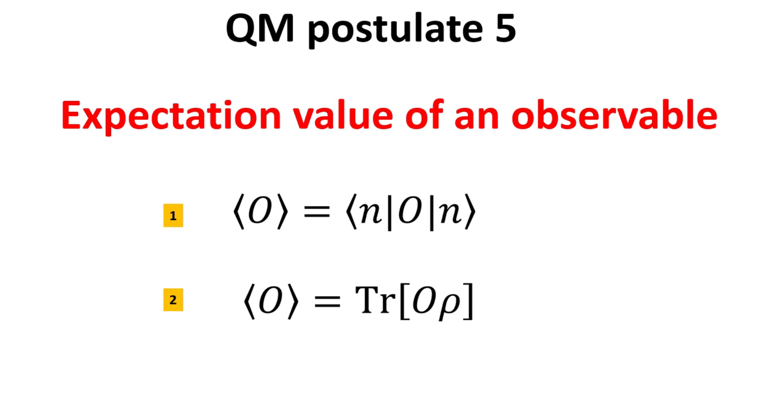Every observable is described by a Hermitian operator O, and the expectation value of that observable is given by taking the bra-ket of the observable O. This is given by equation one.